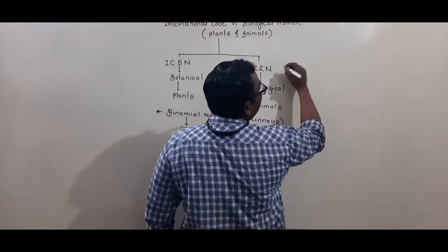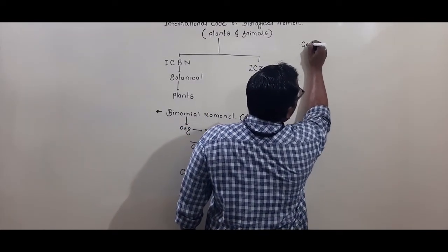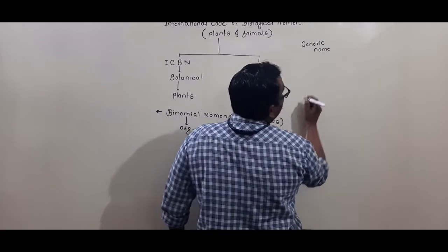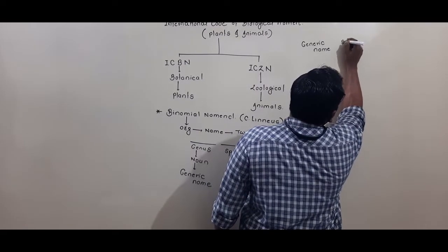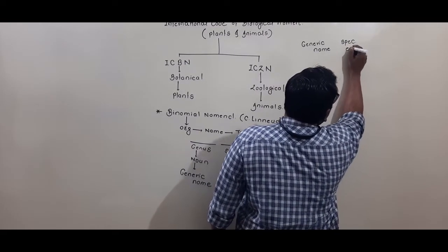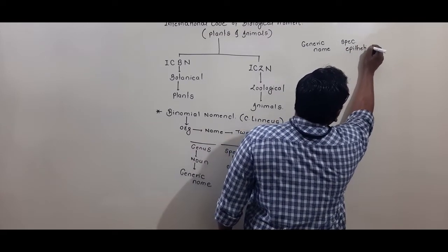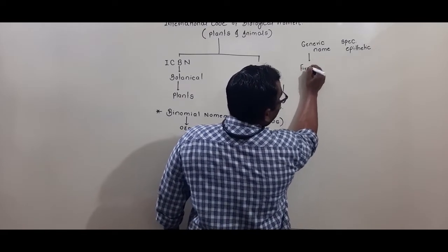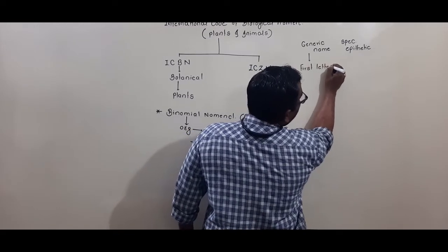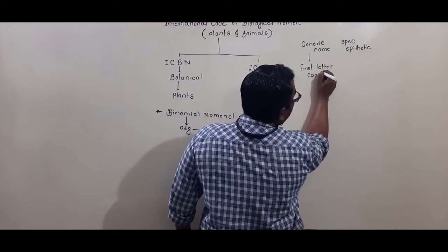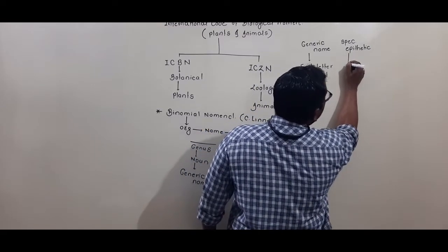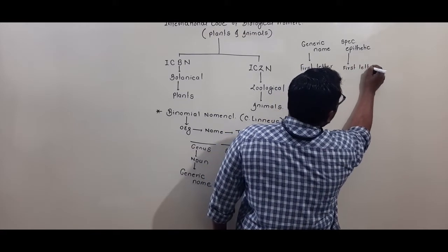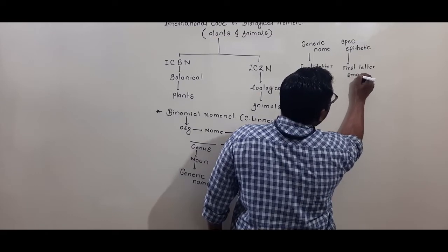In binomial nomenclature, the first word is the generic name and the second word is the specific epithet. The first letter of the generic name should be written in capital, and the first letter of the specific epithet should be written in small (lowercase).